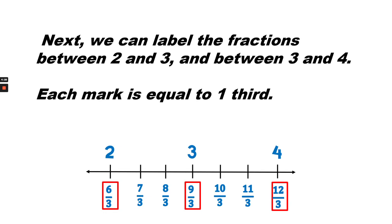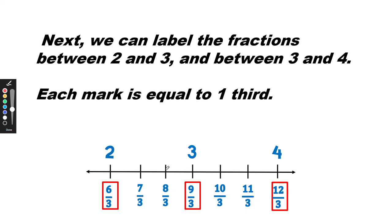Next, we can label the fractions between two and three and between three and four. Each mark is equal to one third. So as you can see, we started at six thirds and we're going up by one third each time. So it's six thirds, seven thirds, eight thirds, nine thirds — or three — ten thirds, eleven thirds, twelve thirds, or four.